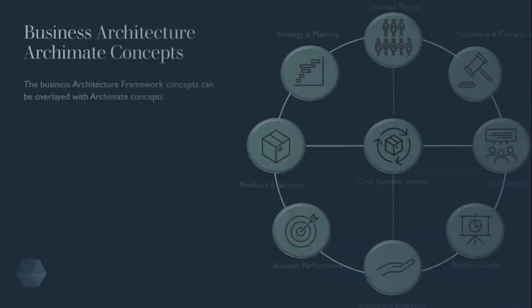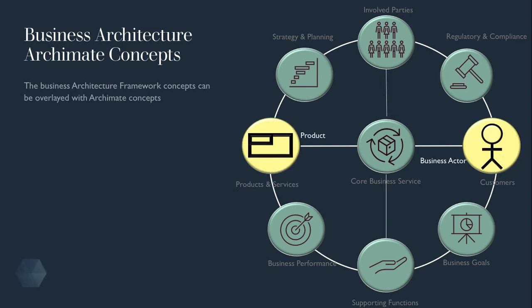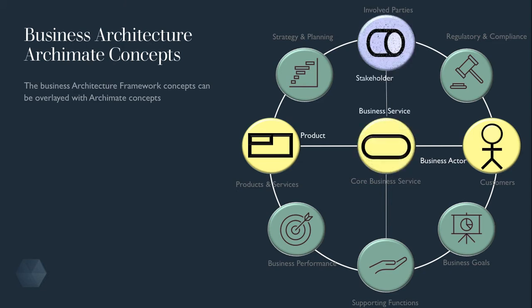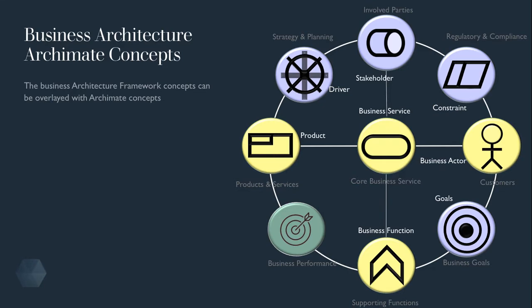The business architecture framework concepts can be overlaid with the ArchiMate concepts: the product and services with Product, the business actor for the customer, business service for the core business services, stakeholder for involved parties, business function for the supporting functions, driver for the strategy and planning, goals for the business goals, constraints for regulatory and compliance, and outcome for business performance.